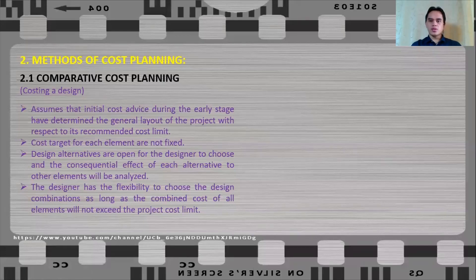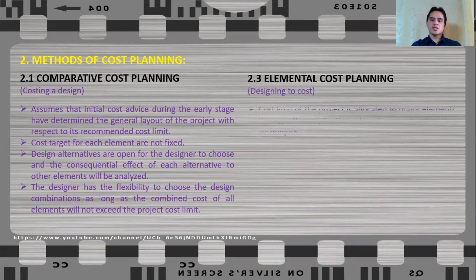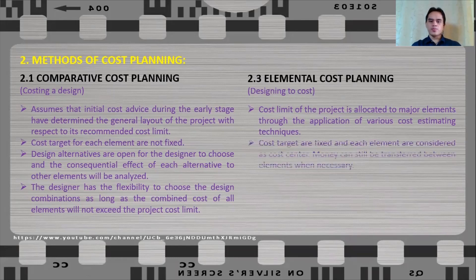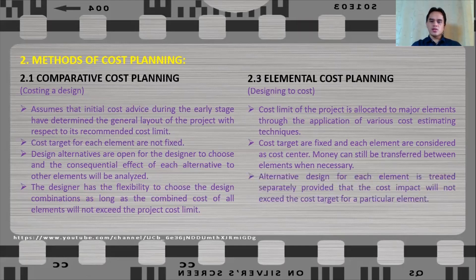The next commonly used method is elemental cost planning, also known as designing to cost. In elemental cost planning, the cost limit for the project is allocated to major elements through the application of various cost estimating techniques. The cost targets are fixed and each element is considered a cost center. Money can still be transferred between elements when necessary, provided proper cost control procedures are observed. The designer is constrained by the cost target and must ensure that design alternatives do not exceed the cost target for a particular element.